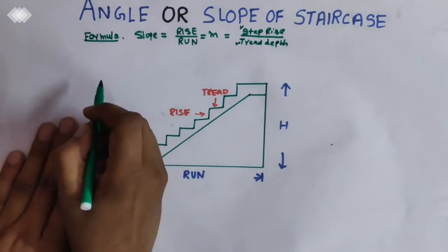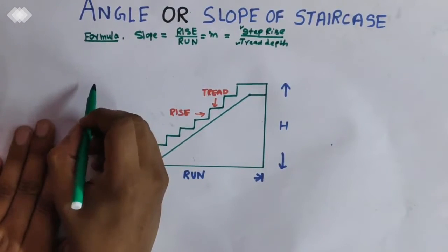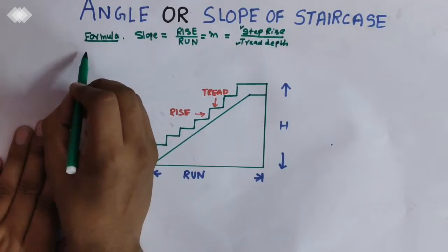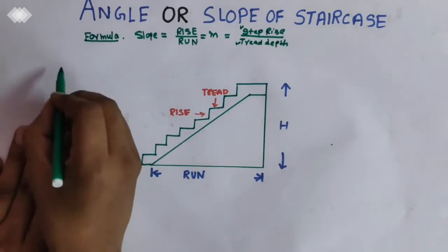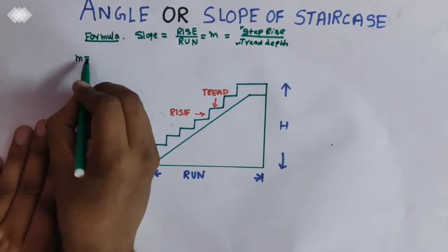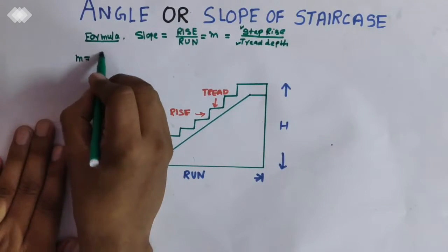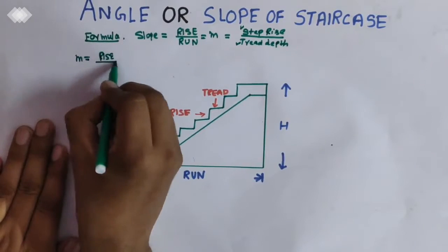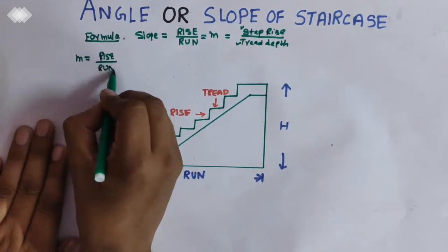So if we calculate the formula, the m is equals to rise by run.